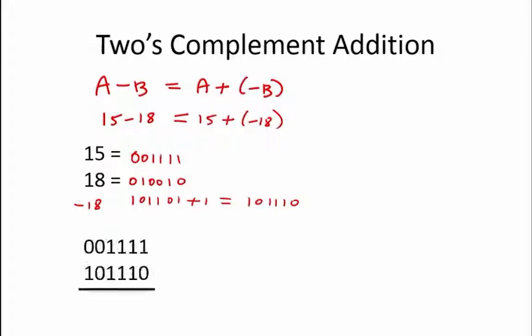We can now take our two's complement representation of our two numbers and add them together. Whenever we add 1 plus 1 in binary, that produces a 0 plus a carry of 1. So our final sum is 111101.